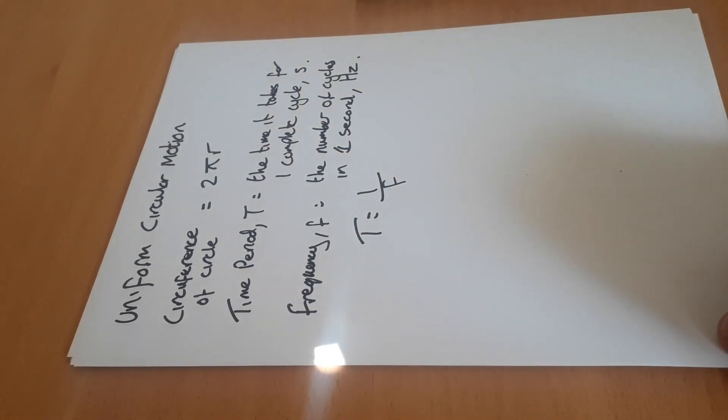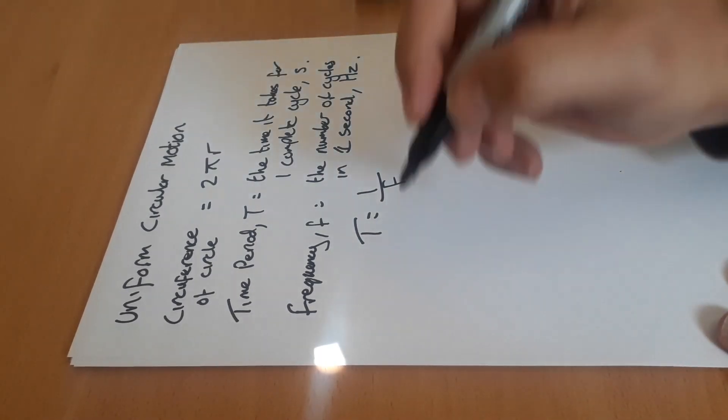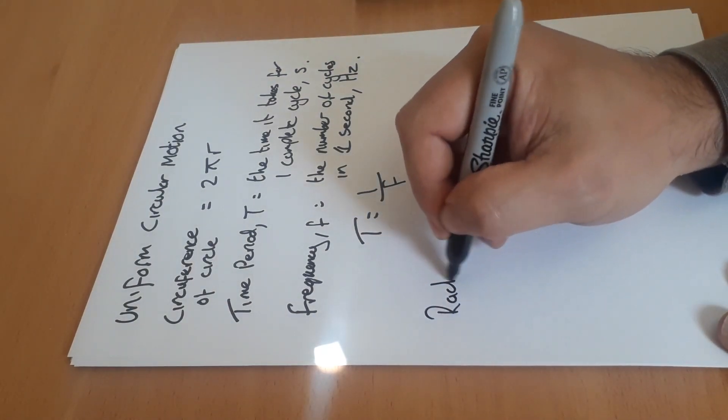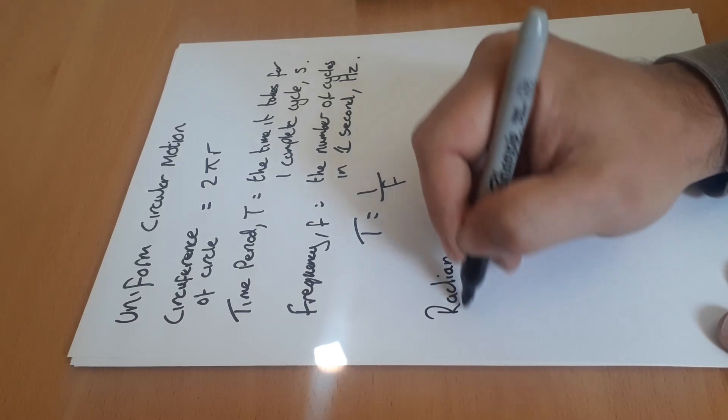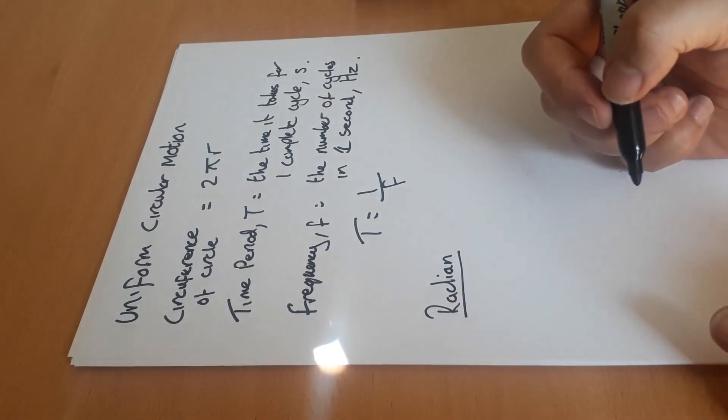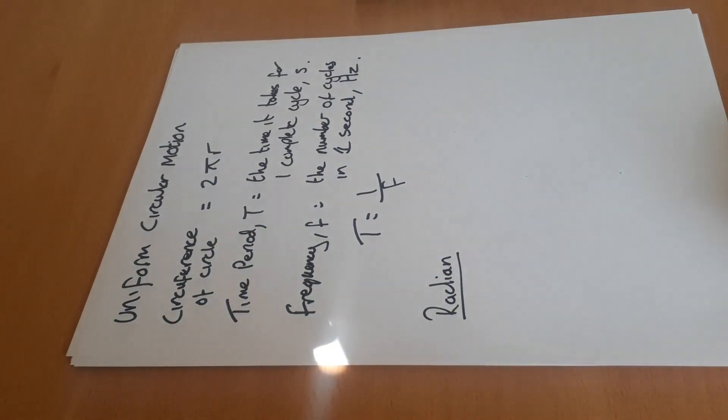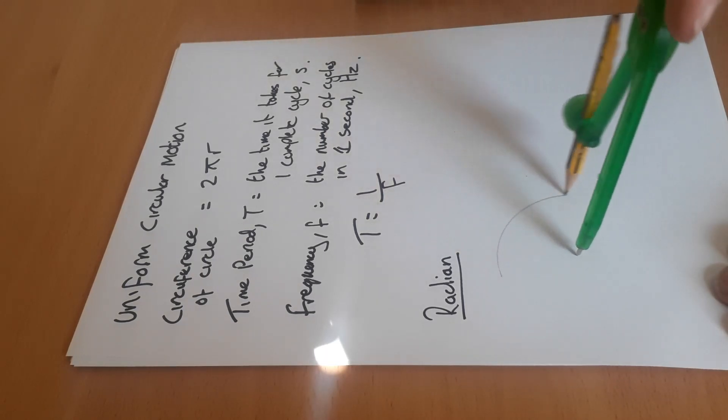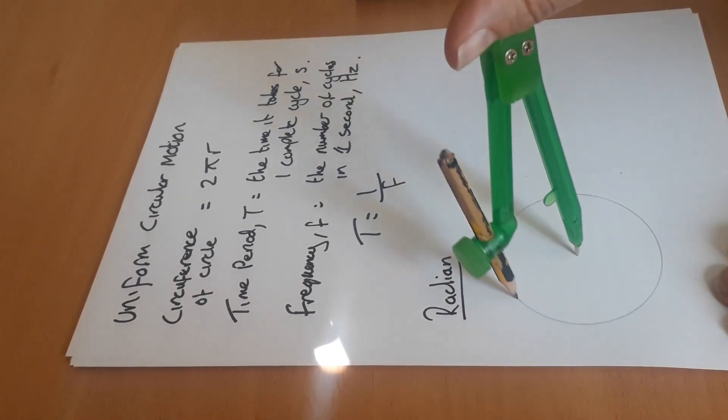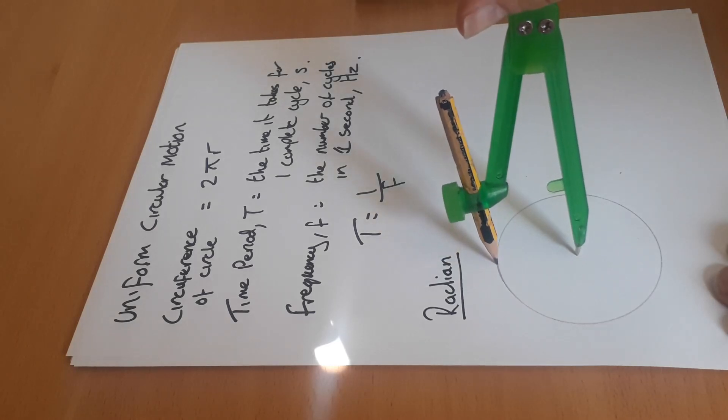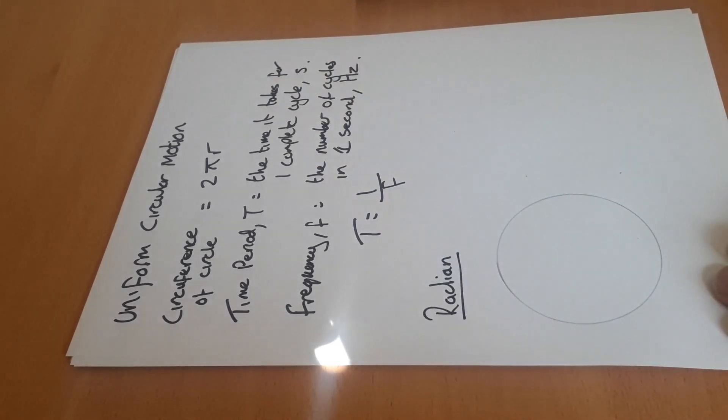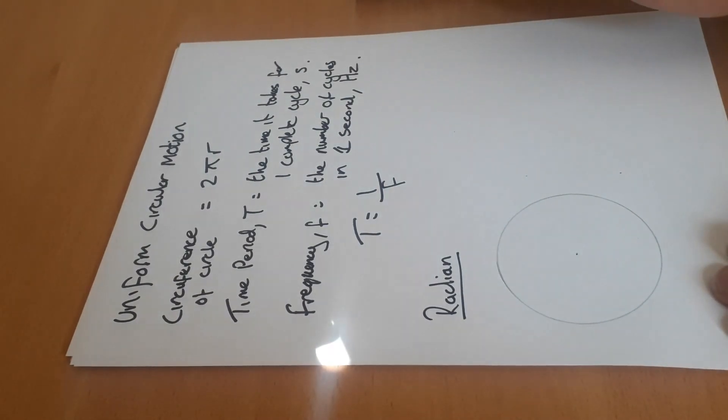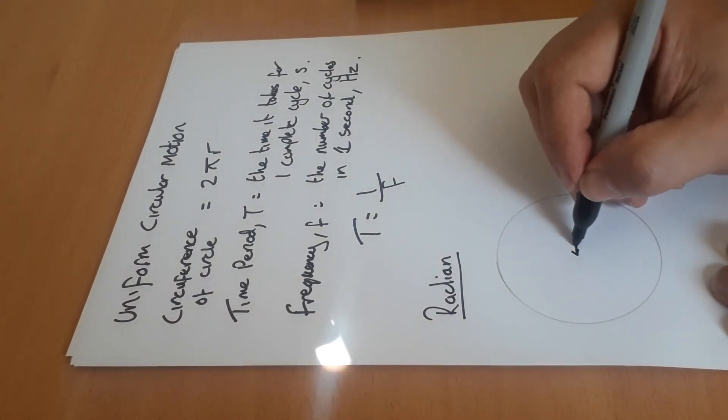Now we'll start off by looking at the radian. So to start off with, I'm going to draw a circle, an accurate one for a change with a compass. And I think you can just about make that out, and an important dimension when it comes to circles is its radius.